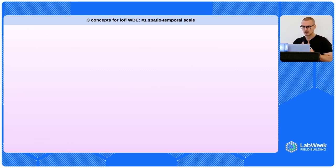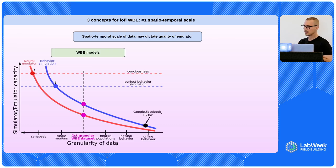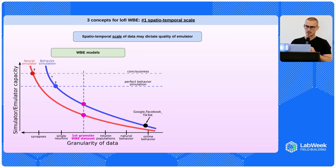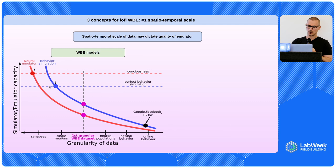I'm going to talk about the three concepts that drive lo-fi whole brain emulation. One of them is this idea of scale: we're trying to build an emulator, and the performance of emulators — I have it shown in blue and red — I separated them because neural emulation and consciousness is a more complicated process. The idea is you collect data at some granularity — synapses, single neurons, EEG, or just online behavior — and then you build a model of the organism you're studying.